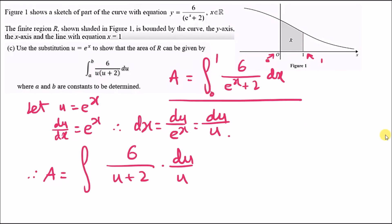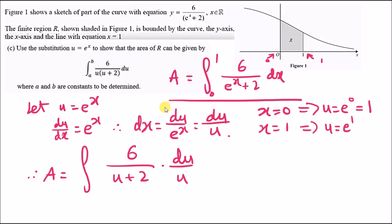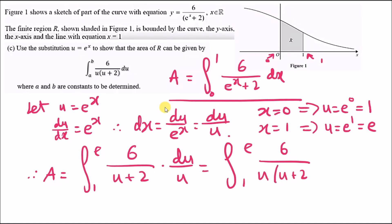We also need to change the limits. The original limits are x = 0 and x = 1. Plugging into u = e^x: when x = 0, u = e^0 = 1; when x = 1, u = e^1 = e. So the new limits are from 1 to e, and the final transformed integral is the integral from 1 to e of 6 over u(u+2) du.